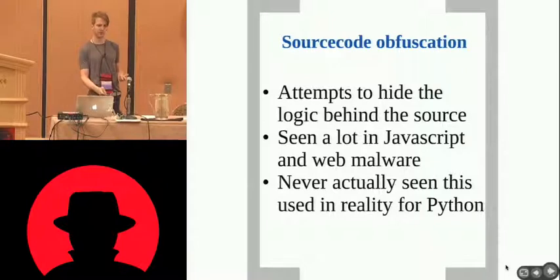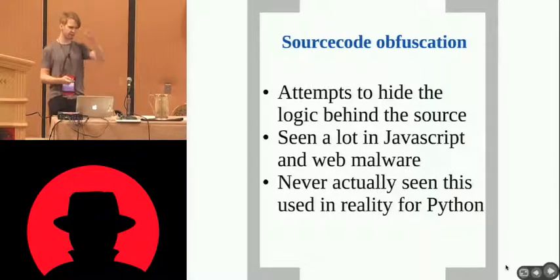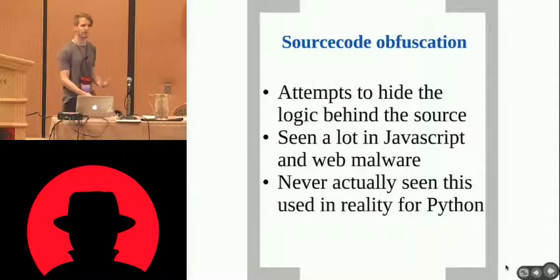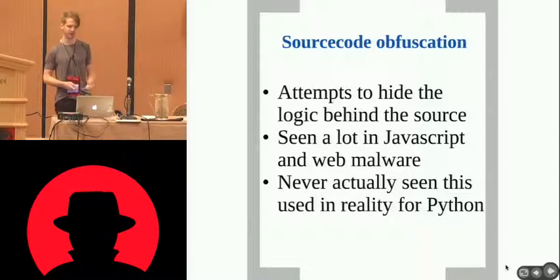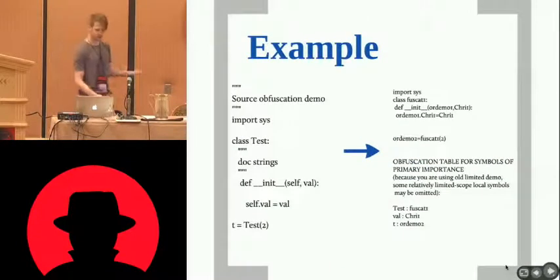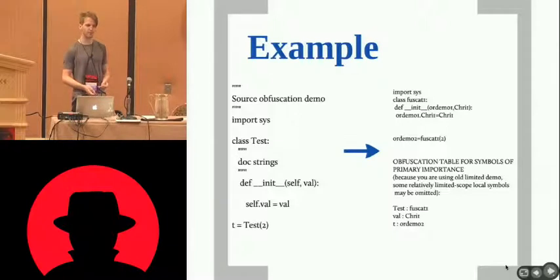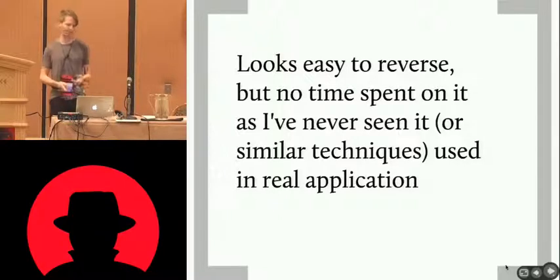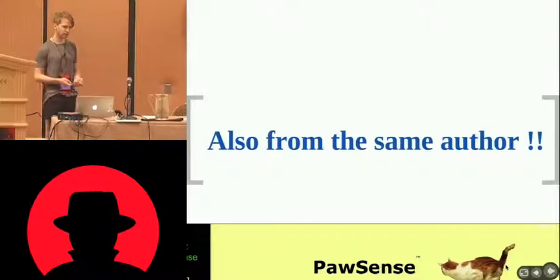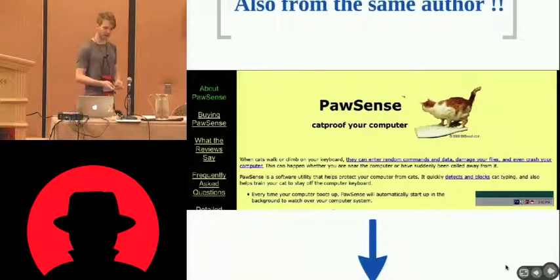While looking around for what people were doing, I found some source code obfuscation — kind of an outlier. Similarly to how people distribute JavaScript malware using exec statements to confuse understanding of source code, there is a product that does this for Python. You can see the standard code on the left and once it's gone through obfuscation, it pops out different on the right. I haven't spent time reversing it and I've never seen it in the wild. However, when looking on that vendor's website, I came across another product called Pawsense, which allows you to cat-proof your computer.